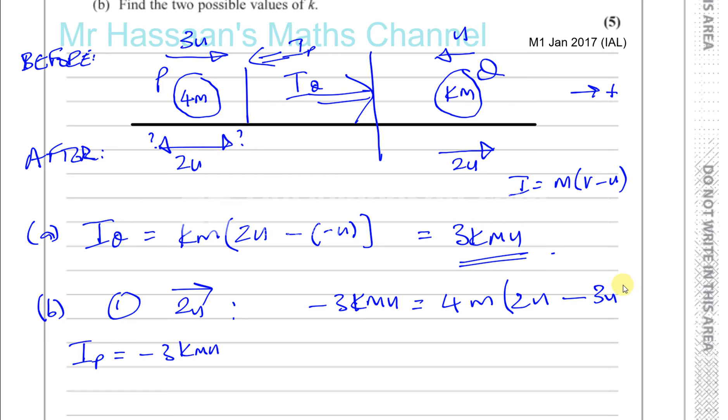You've got 2U minus 3U. So you end up with minus 3KMU is equal to minus U times 4M, so you're going to have minus 4MU. We can get rid of the MUs, and we can say that K is equal to 4 over 3. That's one possible value of K.